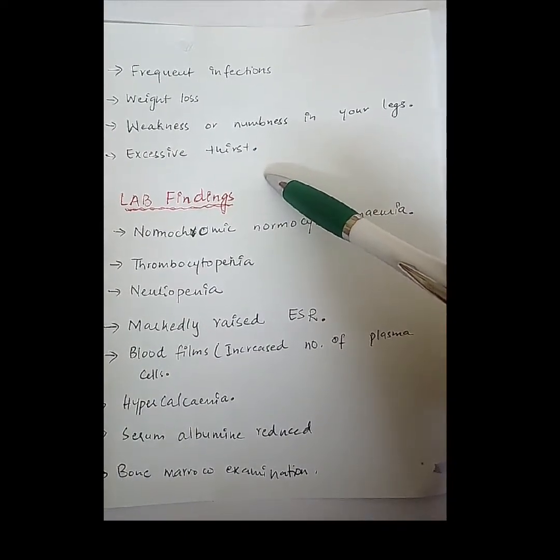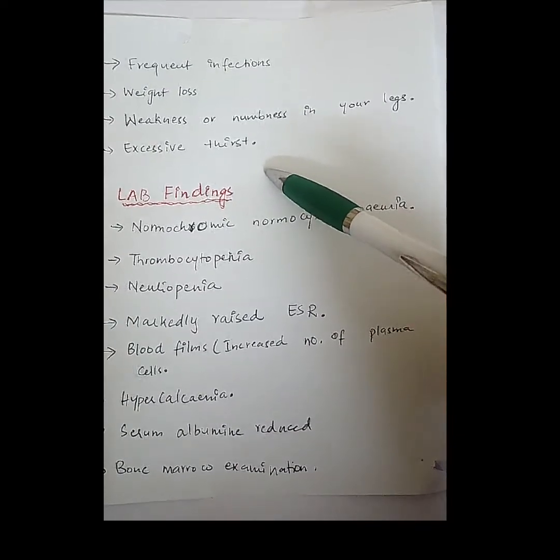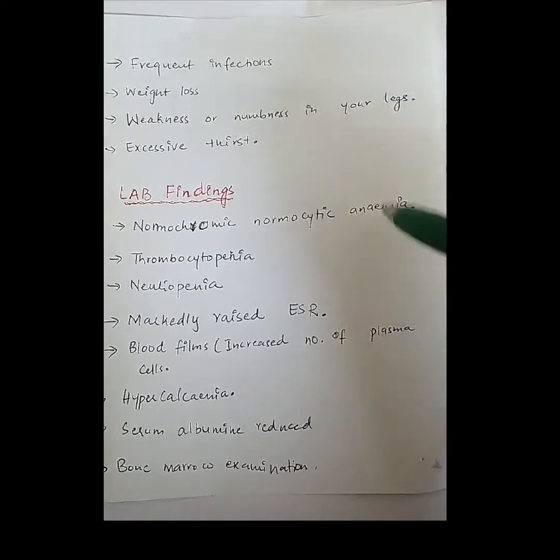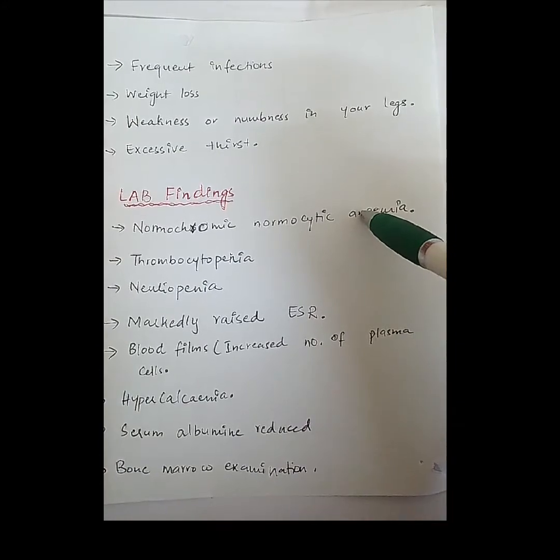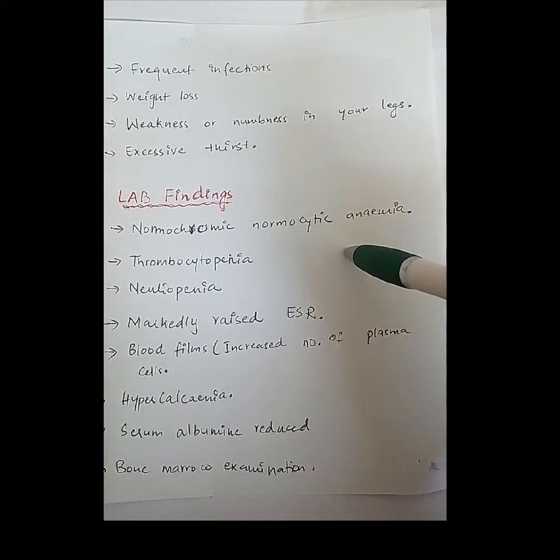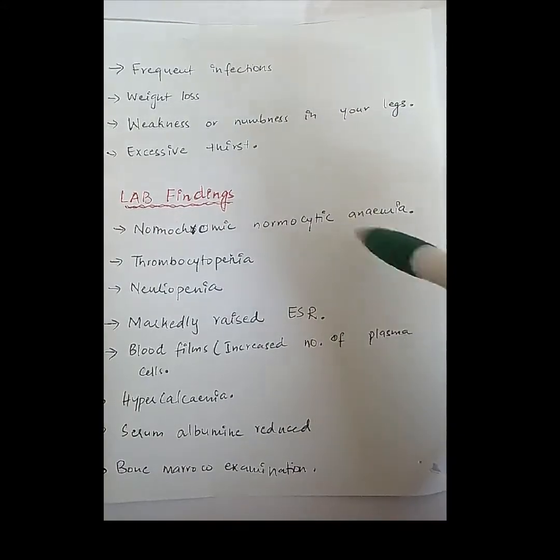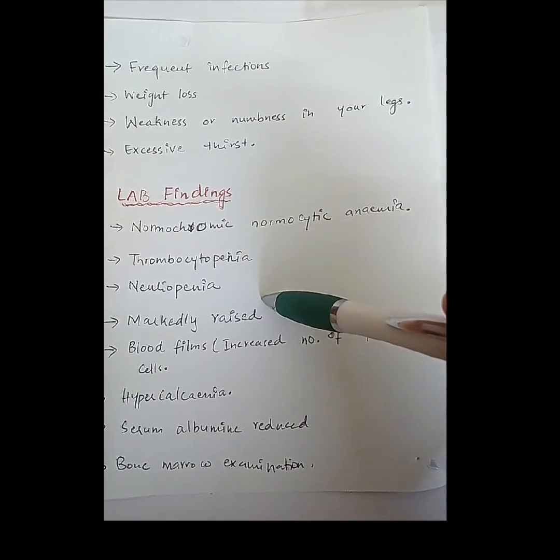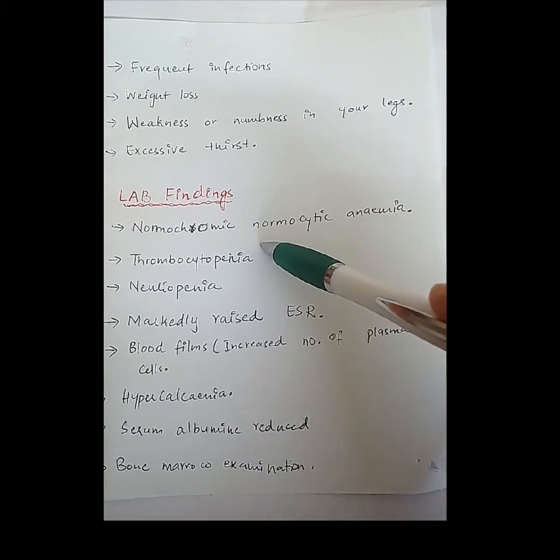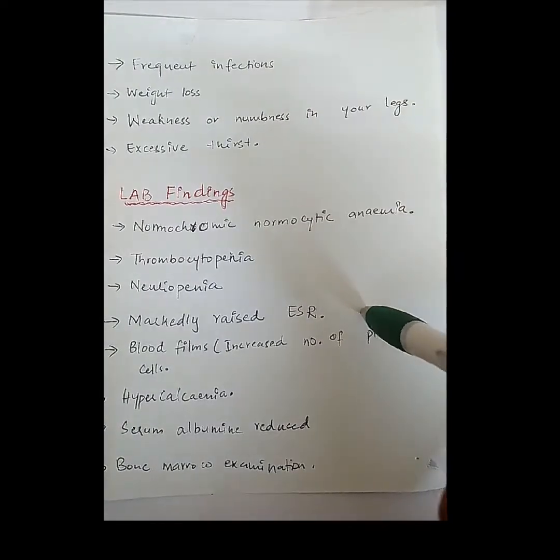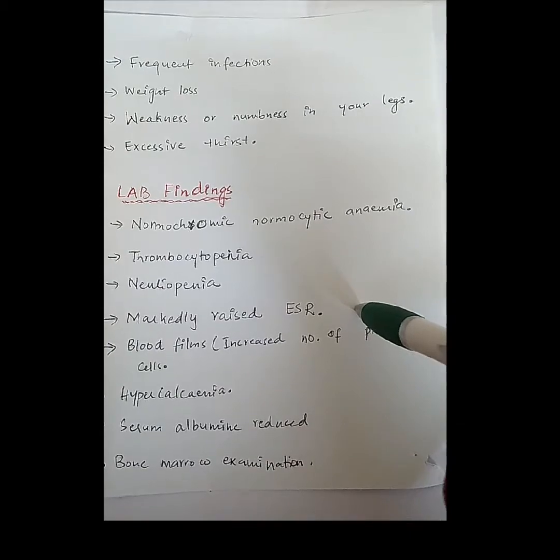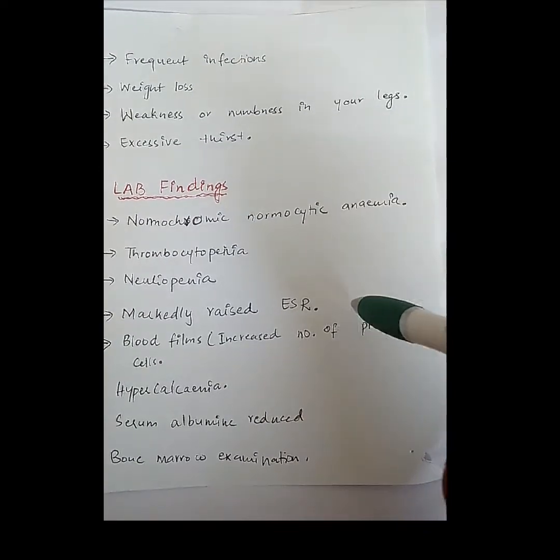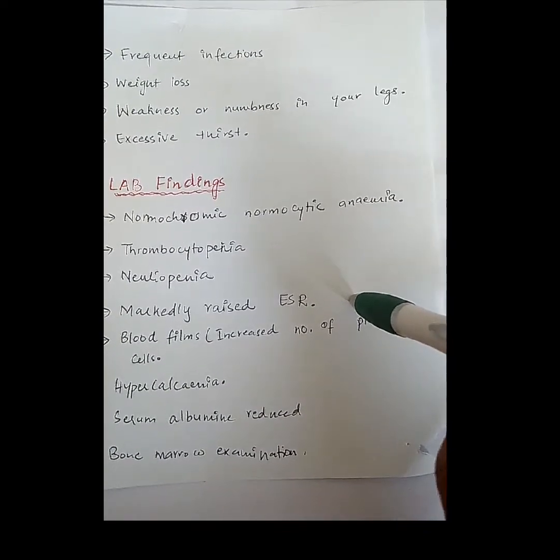Lab findings helpful for treatment include: In CBC, normocytic normochromic anemia, thrombocytopenia with decreased platelet count, and neutropenia with decreased neutrophils. ESR is markedly raised, approximately more than 100 mm per hour in most cases, though rare cases may be slightly less.